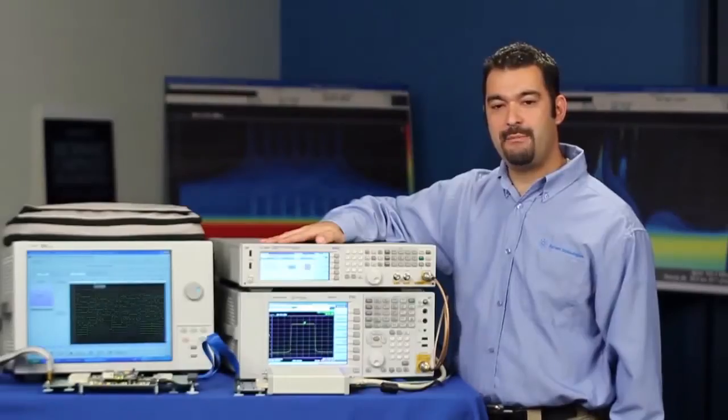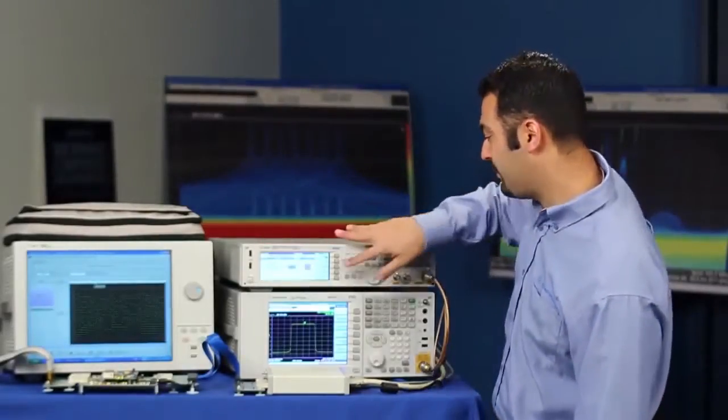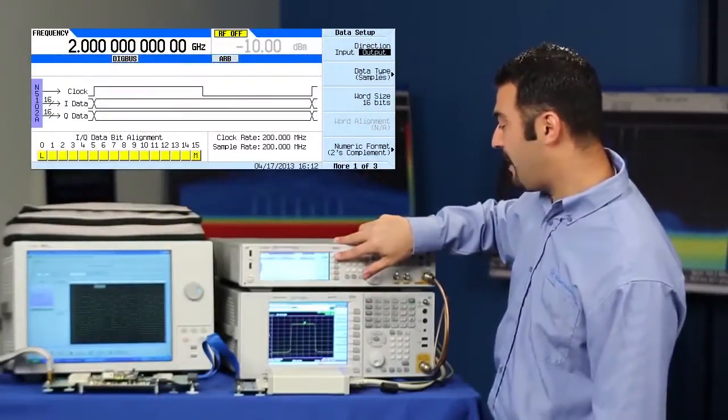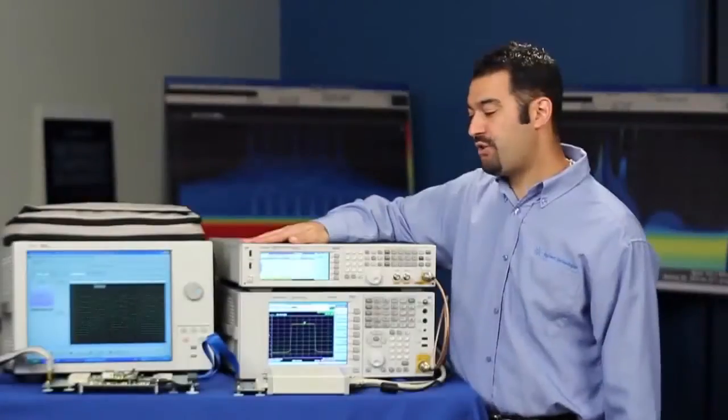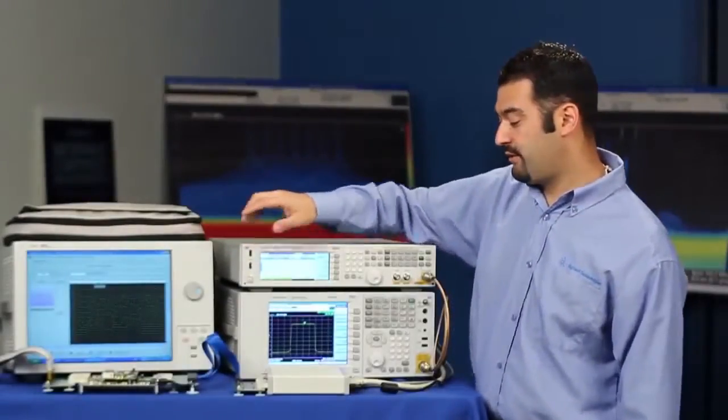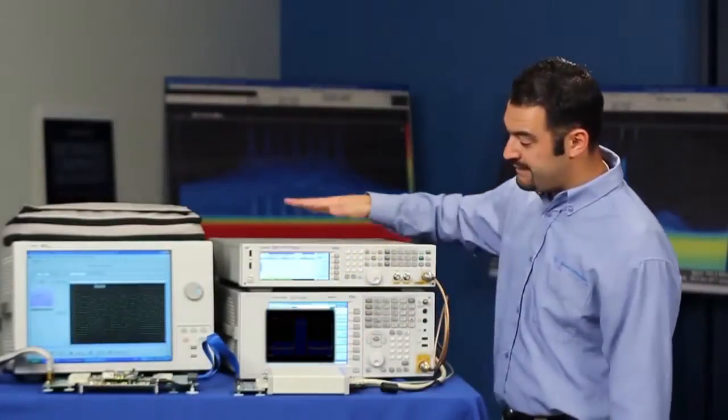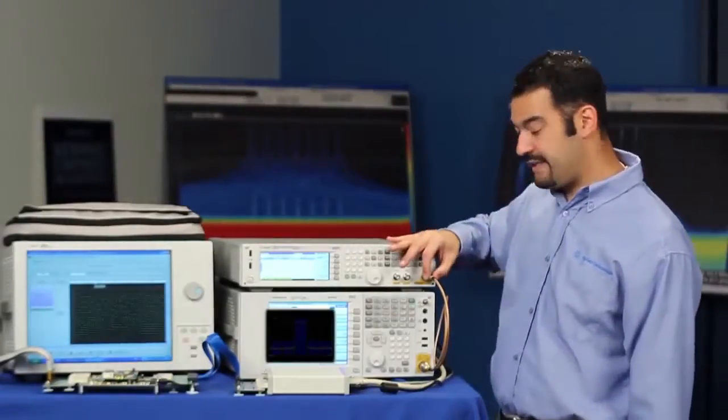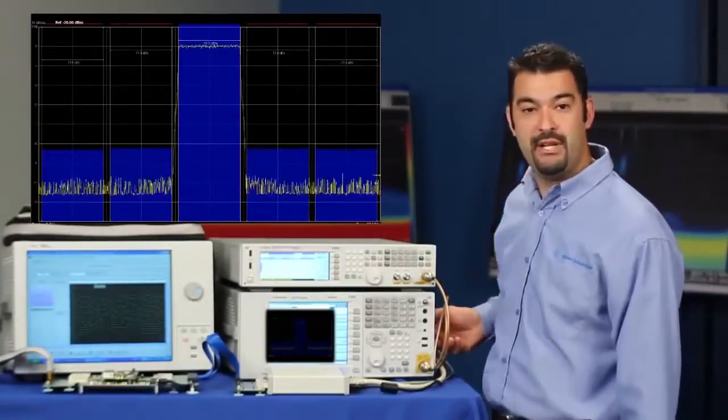Since we already set up our digital output mode, setting up digital inputs should be simpler. All you have to do is go to the data setup and change your direction from output to input. Once you've configured that, now we're streaming from the device under test to the digital signal interface module over the digital bus into the MXG. The MXG is then up converting it. We set it to 2 gigahertz. And we're going into our spectrum analyzer and doing an ACPR measure.